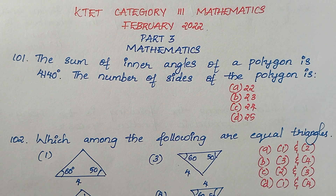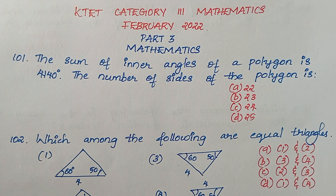Question 101: The sum of inner angles of a polygon is 4140 degrees. We need to find the number of sides of the polygon.